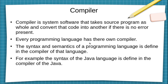Every programming language has its own compiler. The basic thing of a programming language is its compiler — everything of the language, including its syntax and semantics, is defined in its compiler. Syntax defines the structure of a language, and semantics defines the meaning of the language.